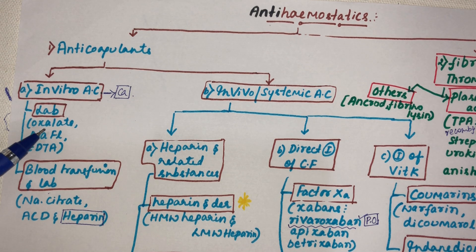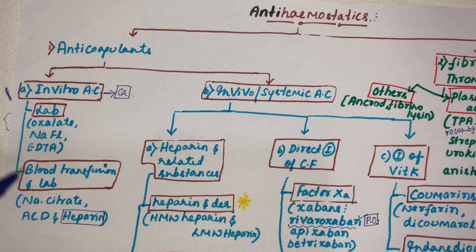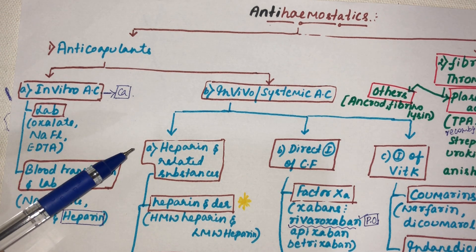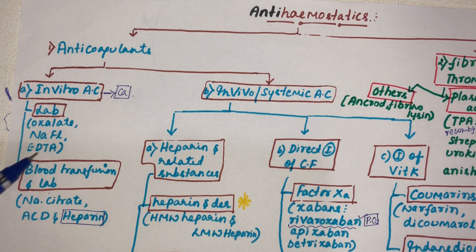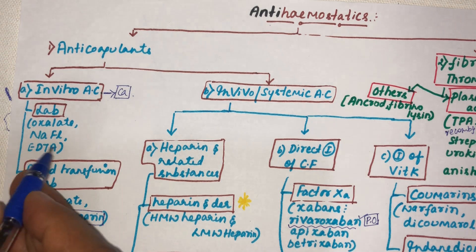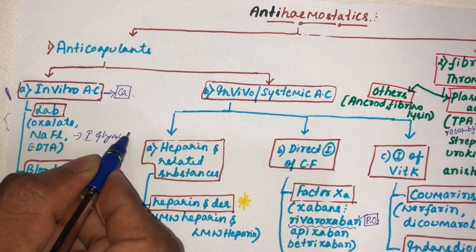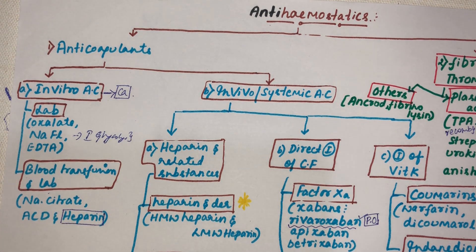These anti-coagulants are used only for laboratory purposes and cannot be used for blood transfusion due to toxicity. Oxalate, when it enters the body, may form calcium oxalate crystals and damage the kidney. Sodium fluoride may cause fluoride toxicity and also inhibits glycolysis, which is important for ATP generation.